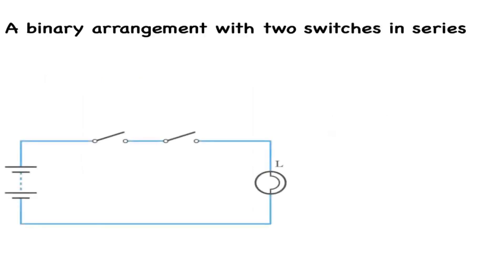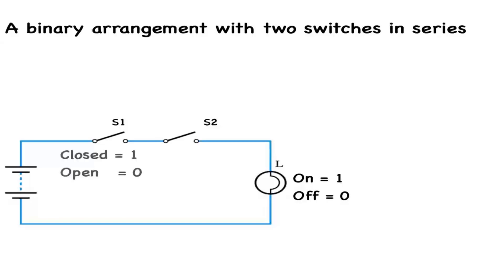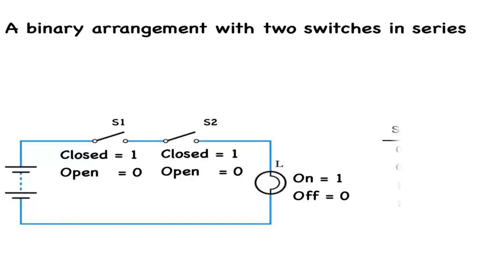This is a binary arrangement that has two switches in series with a power source and a light. Either switch can be open or closed, and the light will either be off or on. As before, we assign binary numbers: for the light, on equals 1, off equals 0; for the switches, closed equals 1, open equals 0. In order to analyze these binary arrangements, we devise a truth table. The two switches form what is known in logic gate terms as an AND gate. We state its logic in the equation: L equals S1 AND S2.